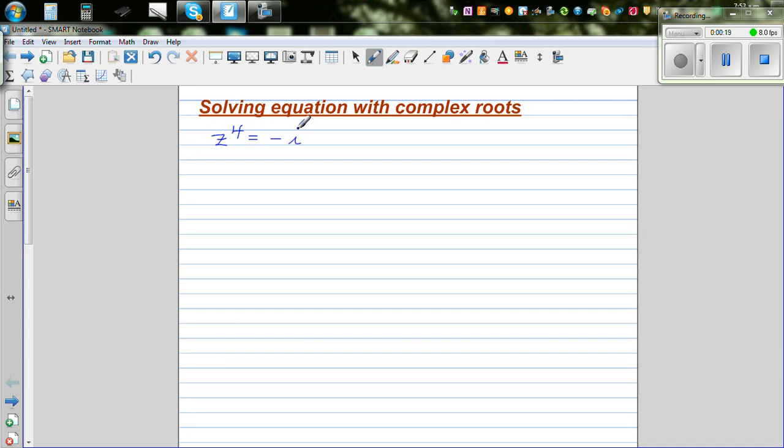We want to solve this. Now as you know, this is a fourth power equation. This has to have 4 roots. Now let's understand what is minus i. Let me draw it out. This is the imaginary arm and this is your real arm.